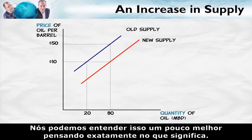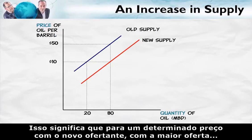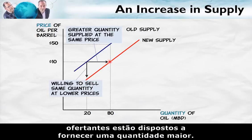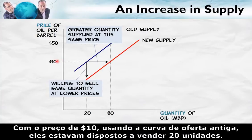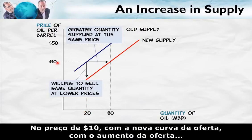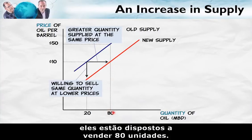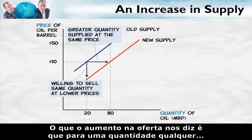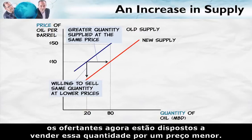We can understand this a little bit better by thinking about exactly what it means. At any given price, with the increased supply, suppliers are now willing to supply a greater quantity. At a price of $10 using the old supply curve, they were willing to sell 20 units; at a price of $10 with the new supply curve, they're now willing to sell 80 units. We can also understand an increase in supply using the vertical reading: for any quantity, suppliers are now willing to sell that quantity at a lower price.